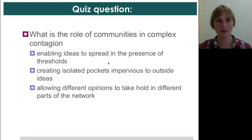So having seen several of these demonstrations, let's see if you've built up enough intuition to answer the following. What is the role of communities in complex contagion? Do they enable ideas to spread in the presence of thresholds? Or do they create isolated pockets of nodes within the network that are impervious to outside ideas? Or do they allow different opinions to take hold in different parts of the network?